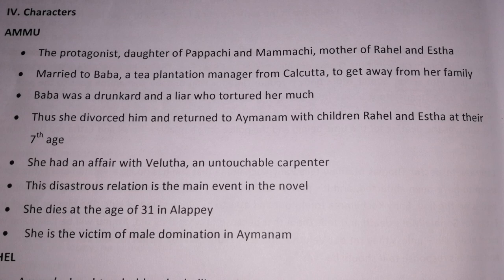In connection with Baba's behavior — Ammu's husband — one day Baba loses his job, but his English boss says he will work something out if Baba will let him sleep with Ammu. Baba runs this indecent proposal by Ammu and she refused it. Following that incident, Ammu takes the kids and moves back to Aymanam. She had an affair with Velutha, an untouchable carpenter. Here the caste system is very clearly highlighted through the character Velutha, and this disastrous relationship is the main event in the novel. She dies at the age of 31 in Alleppey. She is the victim of male domination in Aymanam.